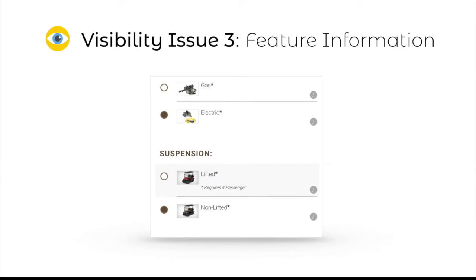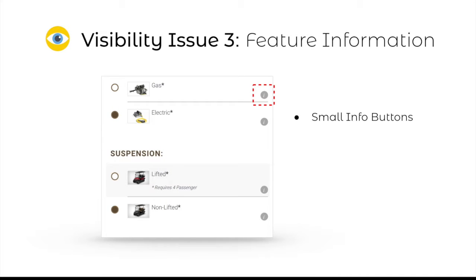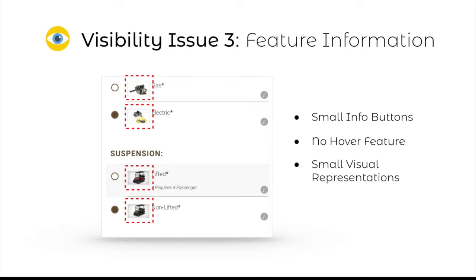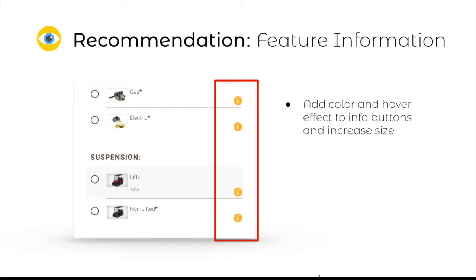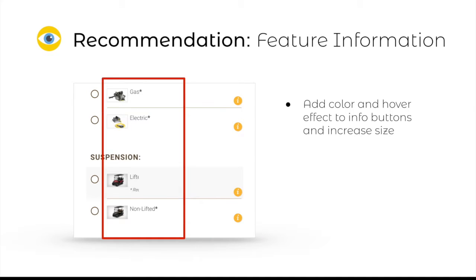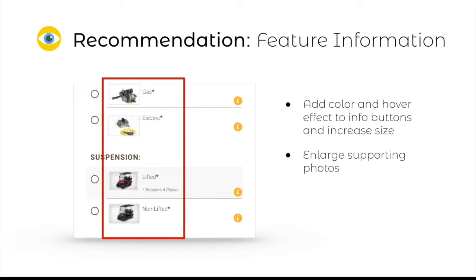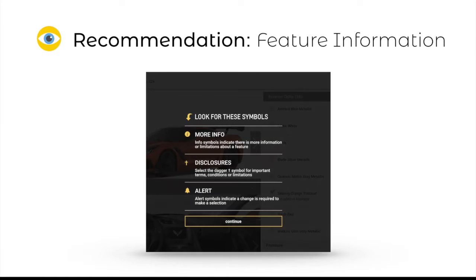Our usability tests and heuristic evaluation uncovered problems with the existing additional feature information button. The button is small, does not utilize a hover color-changing feature, and users — especially older ones — were unable to find the additional information they were seeking. Users noted they found value in visual cues for each option; however, the existing pictures were small and users were unable to locate the larger picture since they could not find the information button. We suggest adding color and color-changing button functionality to the additional information buttons, increasing their size, and enlarging the miniature pictures that accompany each feature. We also suggest a pop-up at the beginning of configurator use that informs users of the eye button's appearance and function.